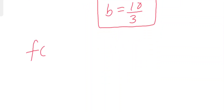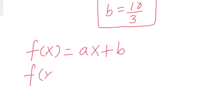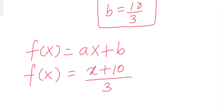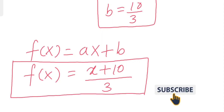So we can construct the function f of x, which was ax plus b. The function is x over 3 plus 10 by 3. This is the solution — it was quite easy. Thank you for watching, see you next time.